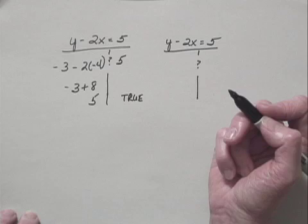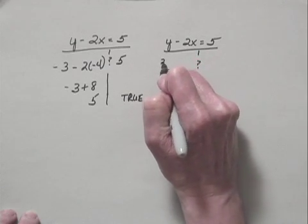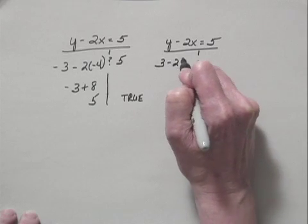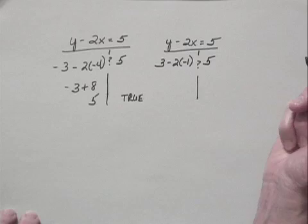Now let's look at the point, excuse me, (-1, 3). I'll substitute 3 for y and negative 1 for x, and we're asking again, is this equal to 5?